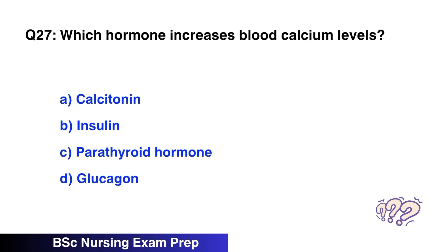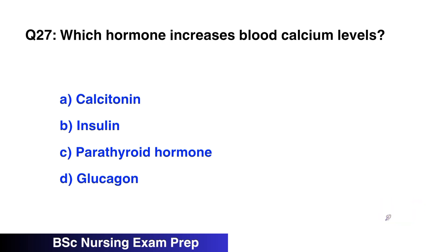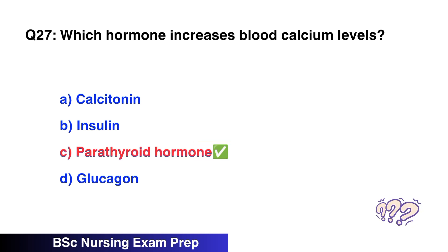Question number 27: Which hormone increases blood calcium levels? The right option is C, parathyroid hormone.